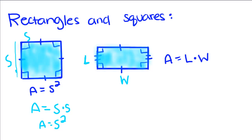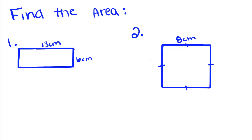Now we're going to do some examples. Find the area of each. So this is a rectangle. To find the area, we're going to take the length, 13,